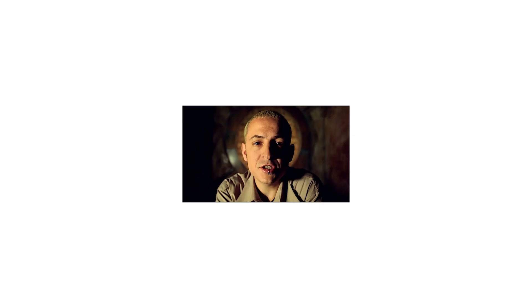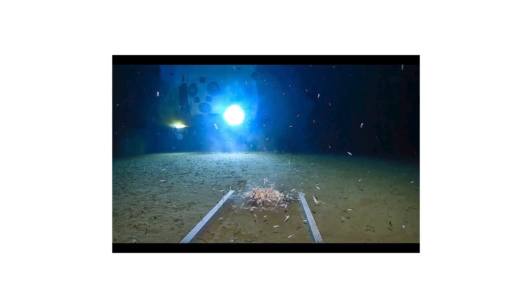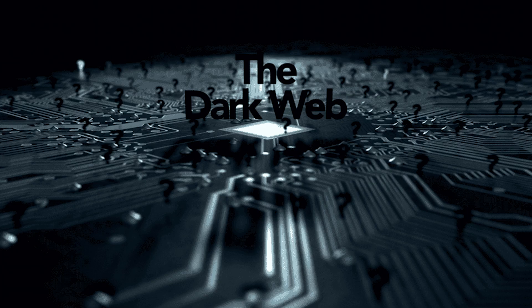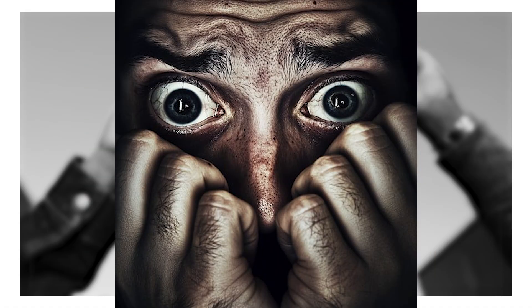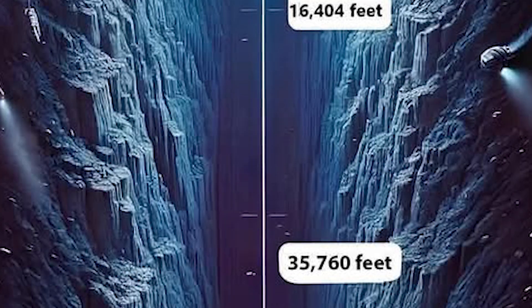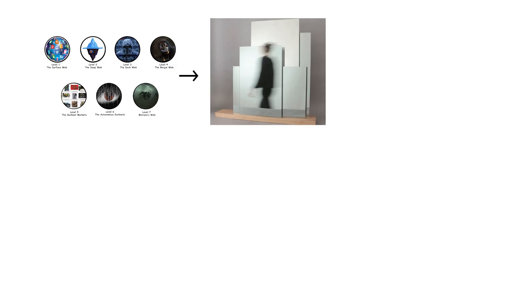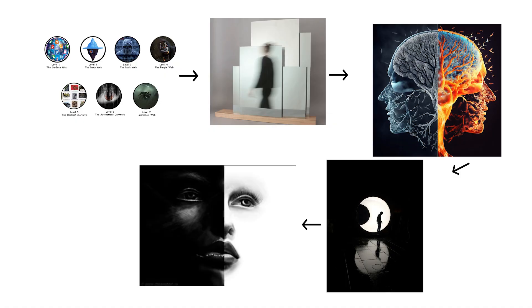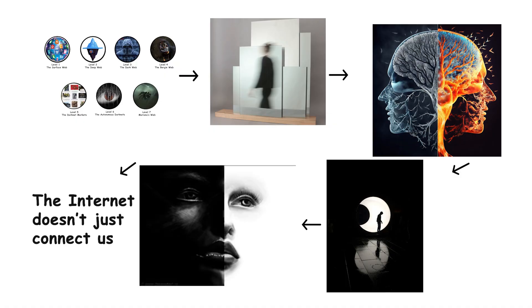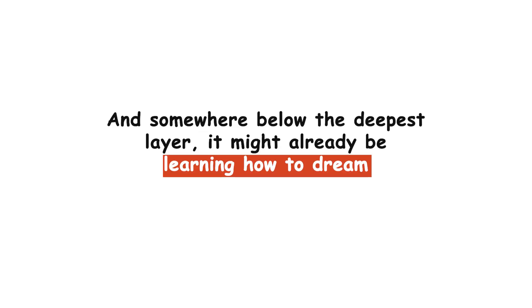Whether it's real or not doesn't even matter anymore. Mariana's Web survives because we need it to — it's the idea that there's still something deeper, still something beyond the reach of control. Because in the end, that's what the dark web has always been about: control, privacy, rebellion, and the blurry line between freedom and fear. From the surface web to the shadows beneath, the climb down these seven levels isn't about discovery — it's about reflection. Every layer is a mirror, showing what happens when knowledge loses its limits, when light meets darkness and learns they were never opposites at all. The internet doesn't just connect us — it contains us. And somewhere below the deepest layer, it might already be learning how to dream.